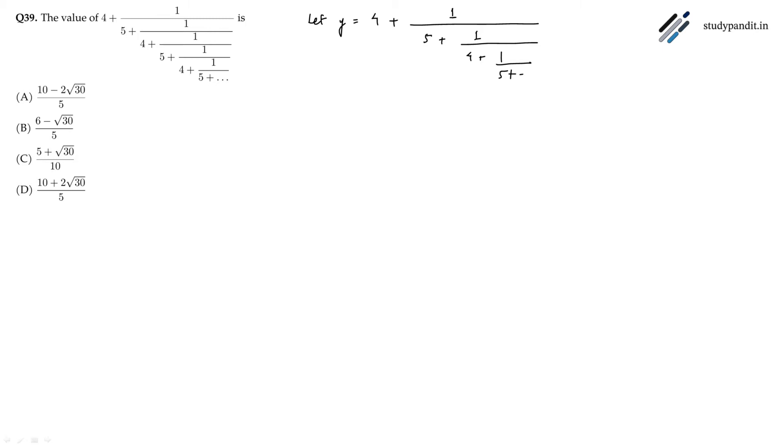As you can see that from here it is nothing but y, so we can write equation 1 as y equals 4 plus 1 divided by 5 plus 1 by y. Solving it, we will get 4 plus y over 5y plus 1.